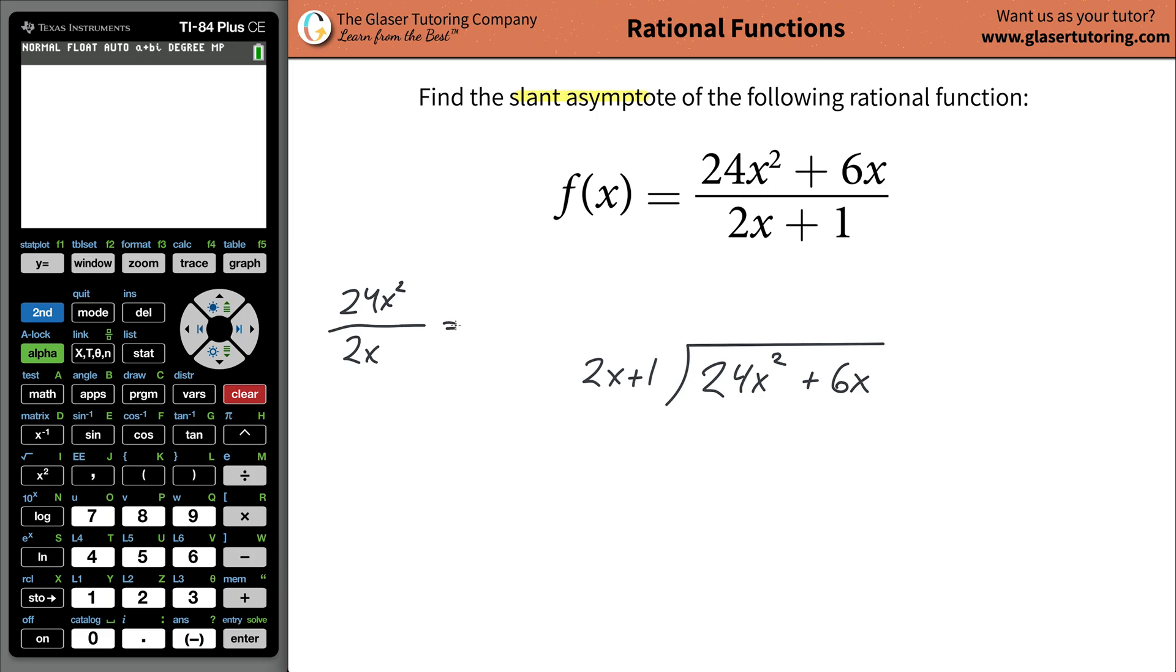And what you're going to come up with is the 2 goes into 24, 12 times, and x goes into x squared x times, right? So this reduces down to 12x. Now 12x is going to be the first term of your quotient. Then what you do is you set up now your subtraction thingamajig, which is the technical name of it, of course.